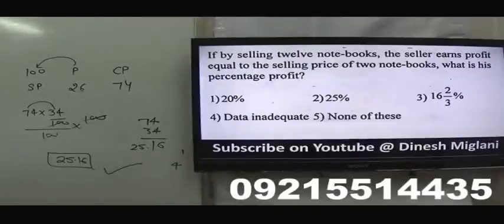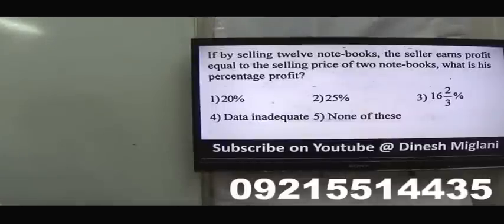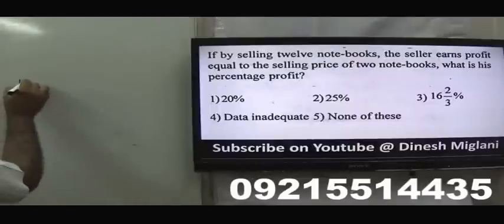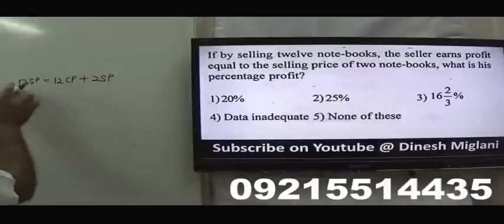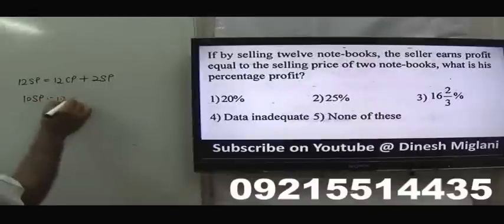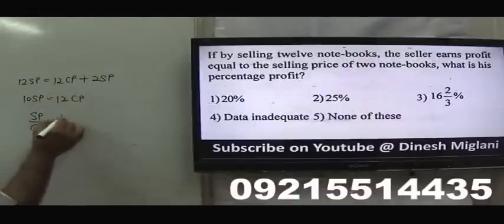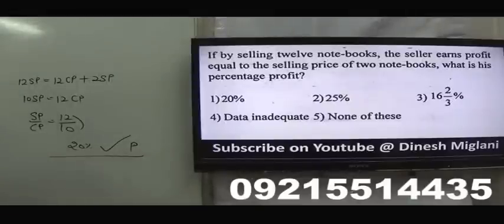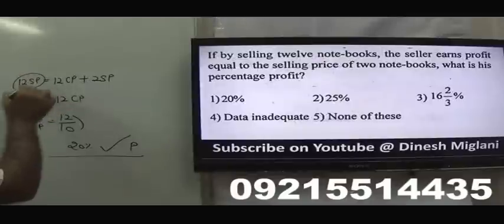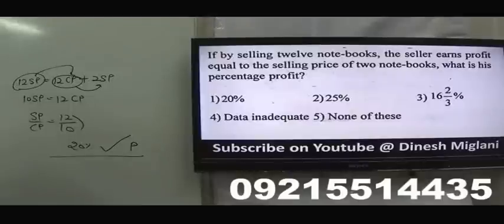Next question: By selling 12 notebooks, the seller earns profit equal to the selling price of 2 notebooks. What is the profit percent? Using the profit equation concept: 12 SP = 12 CP + 2 SP, so 10 SP = 12 CP, meaning SP/CP = 12/10. Profit is 2, cost is 10, so profit percentage is 20%.